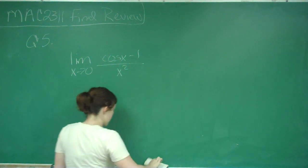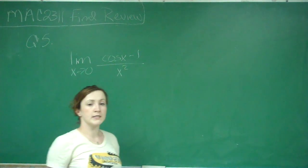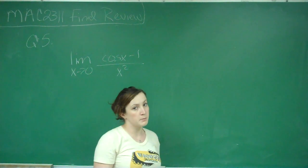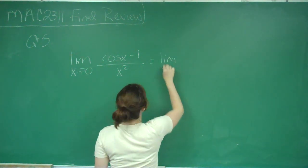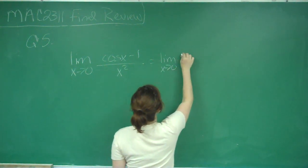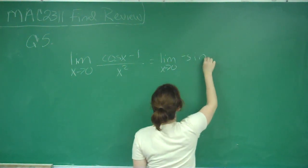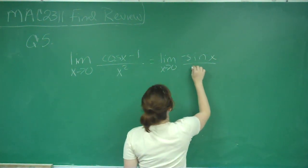This means we're going to use L'Hôpital's rule. Using L'Hôpital's rule, we can take the derivative of the top and the derivative of the bottom separately. So the derivative of the top is going to be negative sine x over 2x.